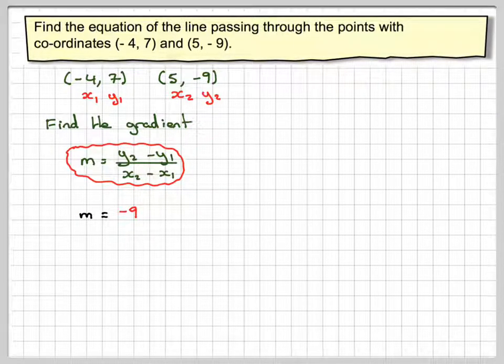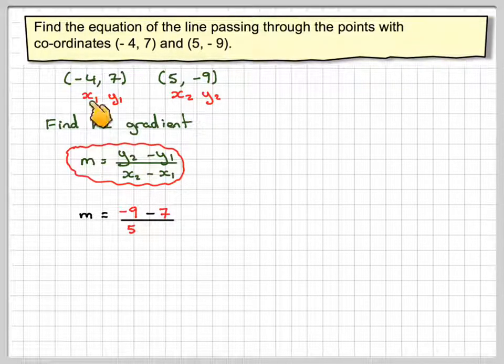So we're going to get, now you need to be careful here because we want negative signs. So we've got -9 minus y1 which is -7 and then 5 minus -4. So be careful with negative signs.